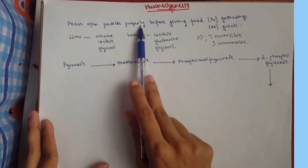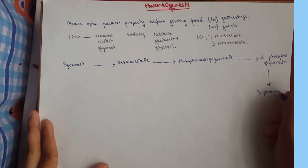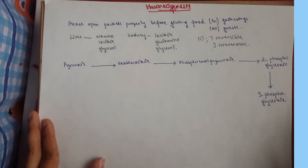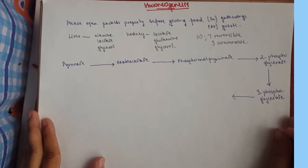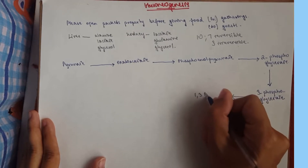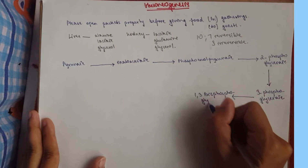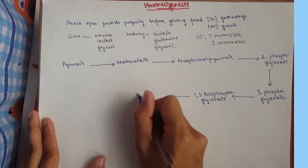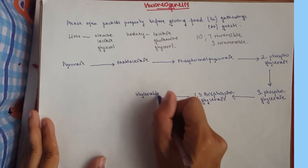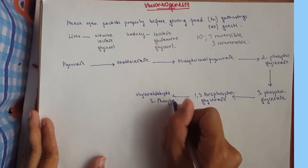After 2-phosphoglycerate we have another phosphoglycerate compound — 3-phosphoglycerate ('Properly' note: same P, different number). Then we move to 1,3-bisphosphoglycerate ('Before'). Next is glyceraldehyde-3-phosphate ('Giving') — I'll write phosphate as just P.